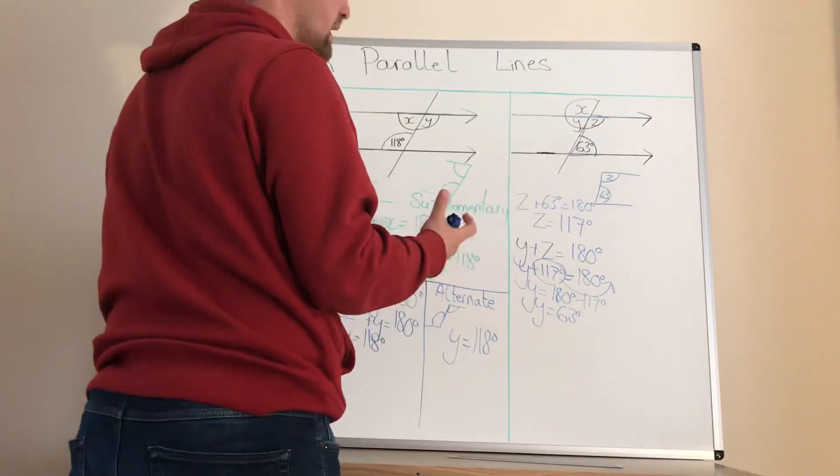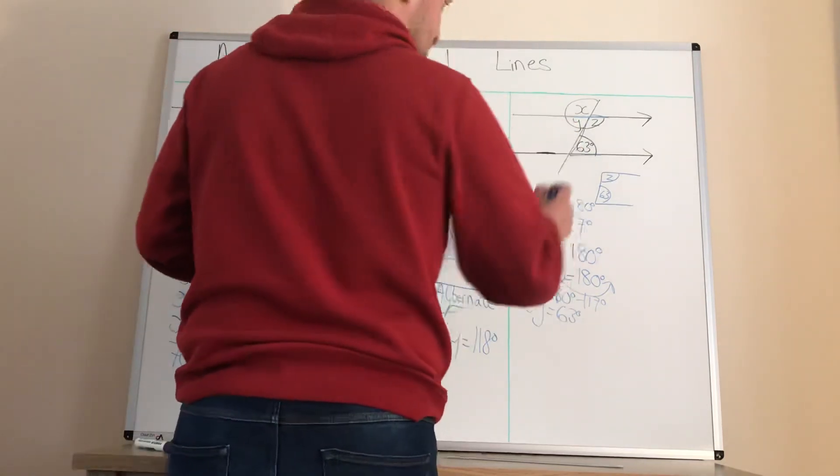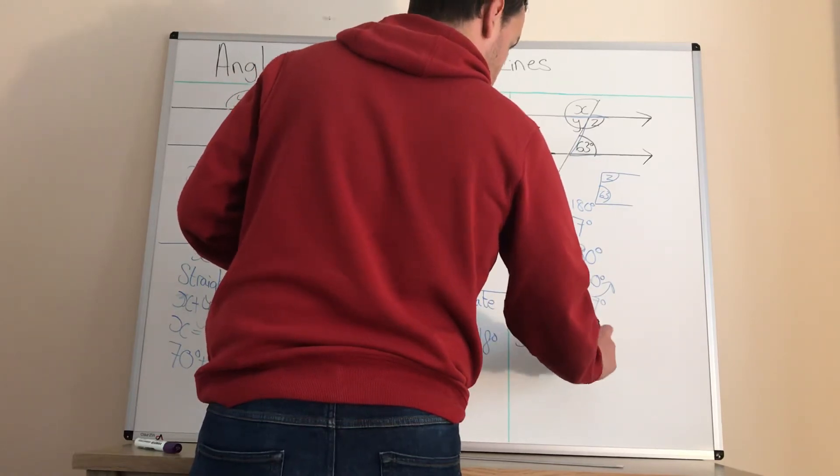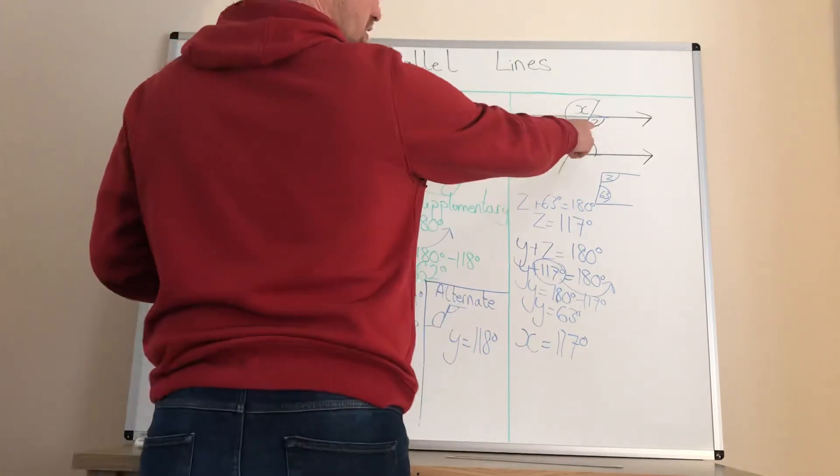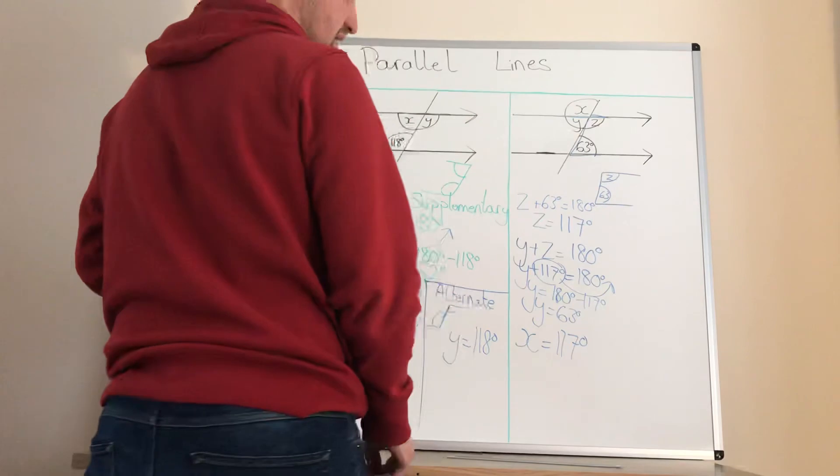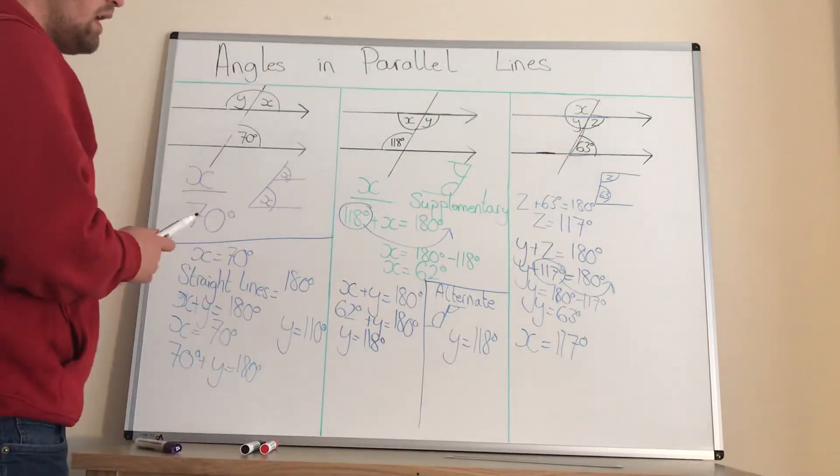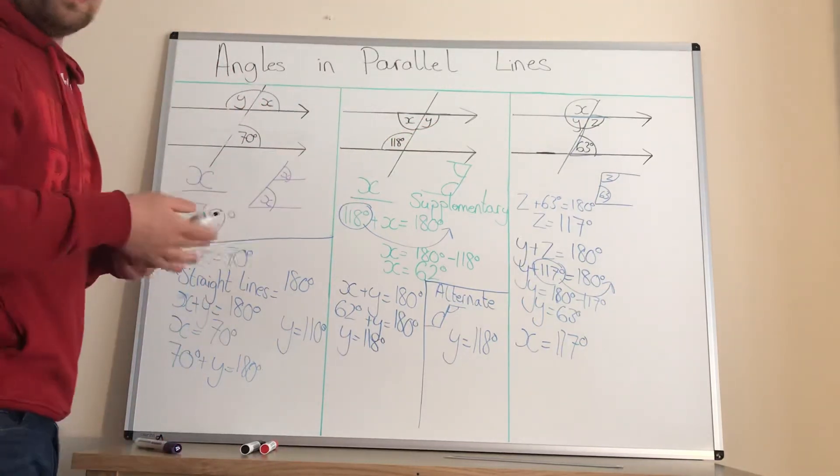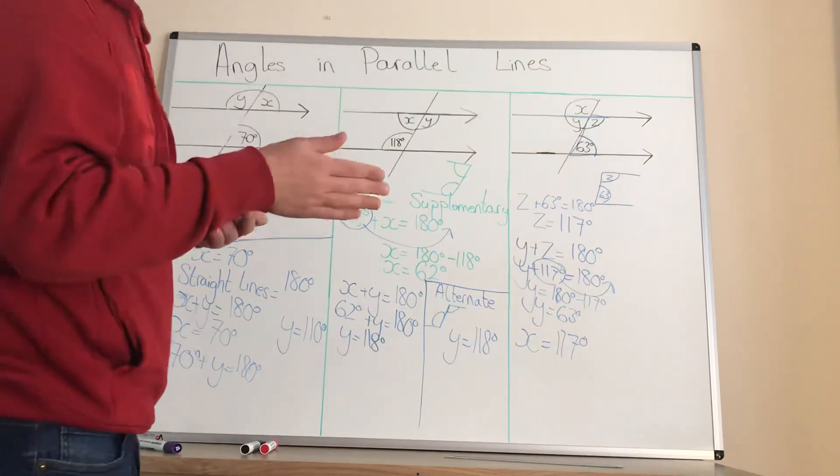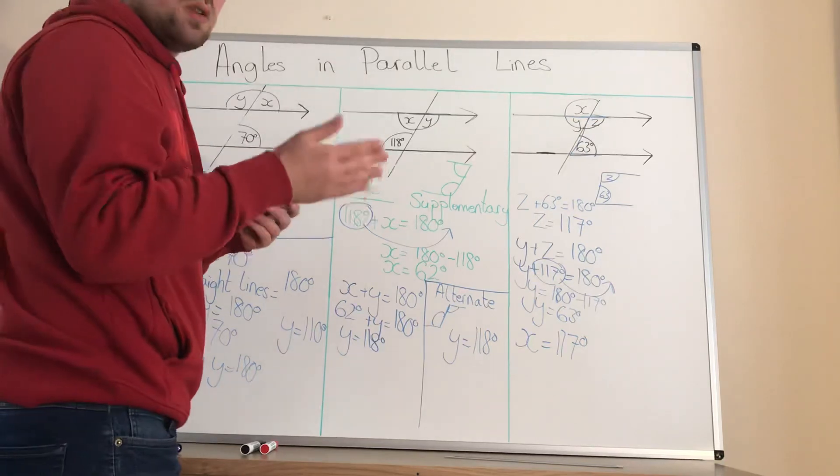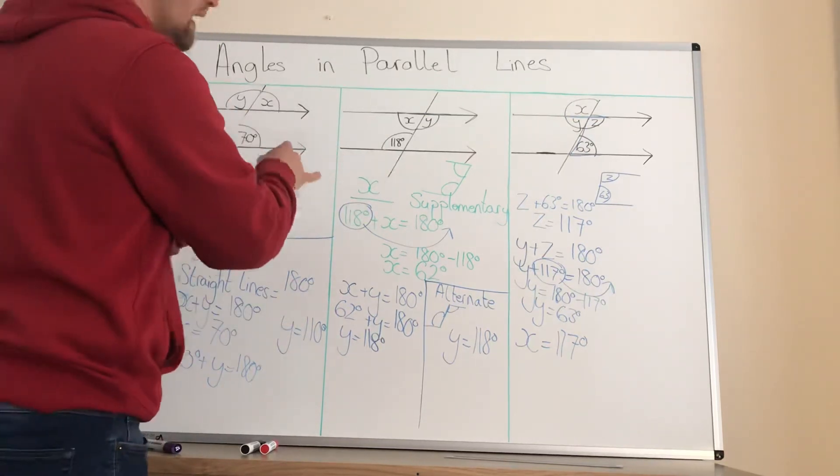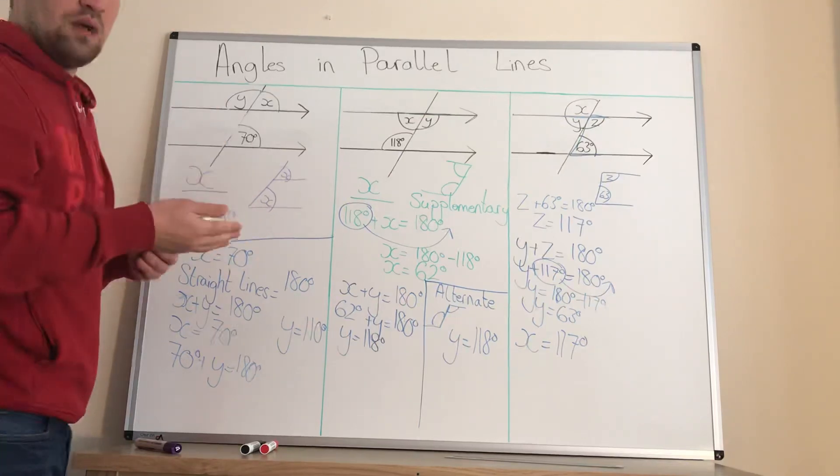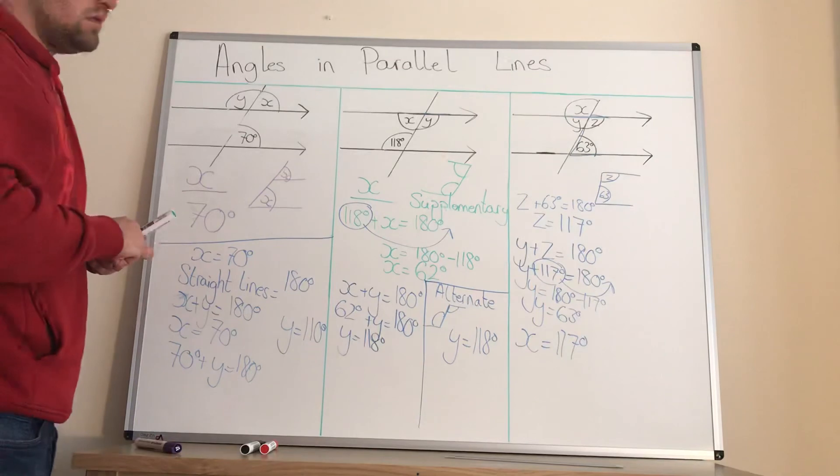So Y is 63. So X I think we can all work out is 117 degrees. So Z is 117, Y is 63, X is 117 degrees as well. Hopefully that explains it a little bit more. As I said, when you've got three angles, there's more than one way to work it out. As long as you get the right answers, there's no 100% correct method. You can use different methods to get exactly the same answers. With these you have to be a little bit more precise. However, again, there is more than one way to work out the angles that you need. If you've got any questions, let me know. Otherwise, enjoy your day guys.